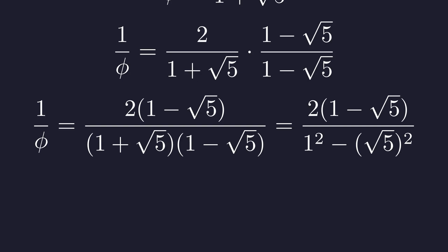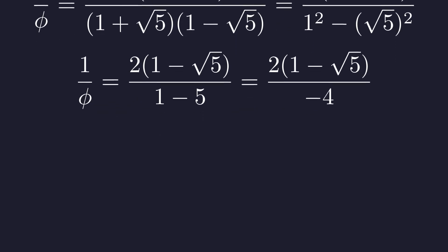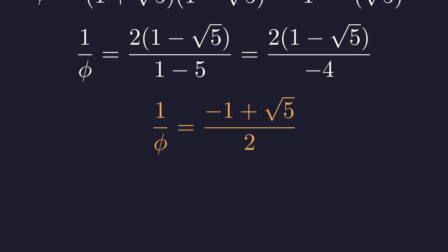Simplifying the denominator, we get 1 minus 5, which is negative 4. After distributing the factor of 2 in the numerator and simplifying, we arrive at exactly the value we found for y. The connection is not a coincidence. It is a mathematical certainty.